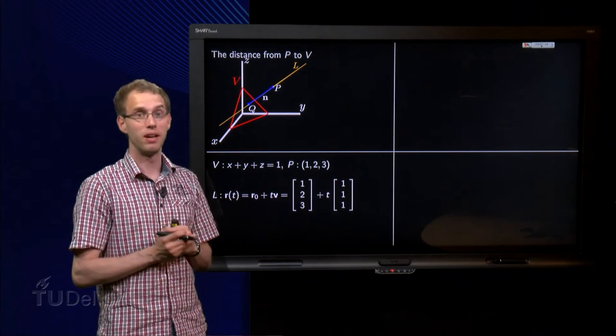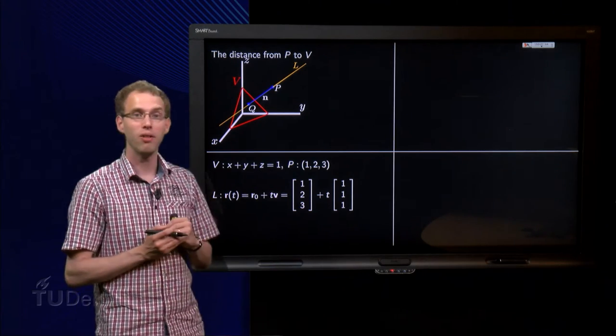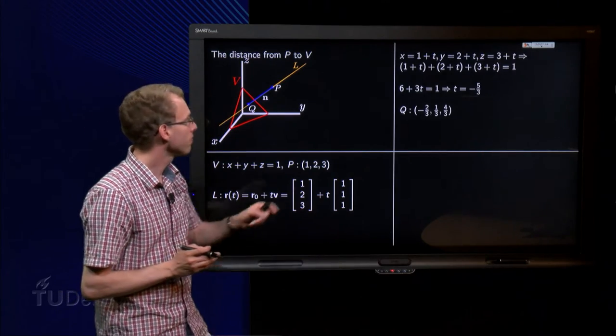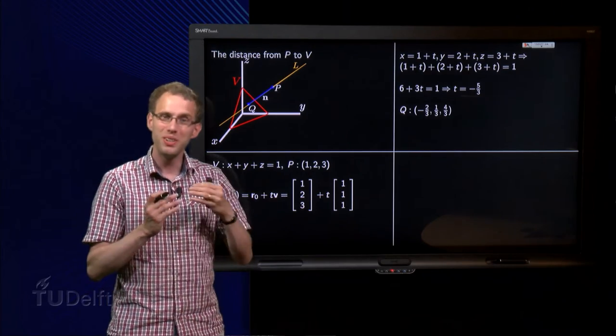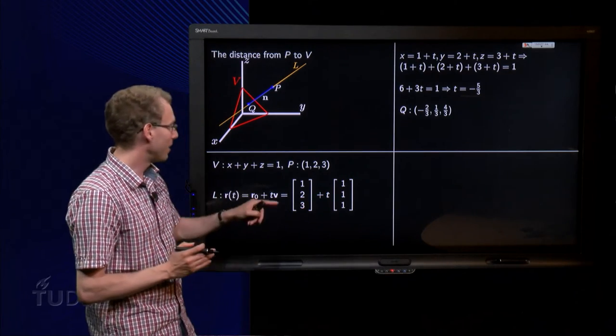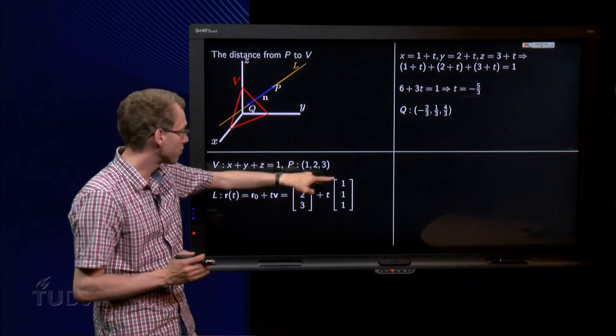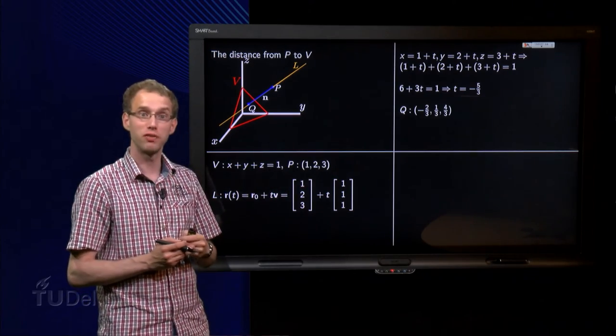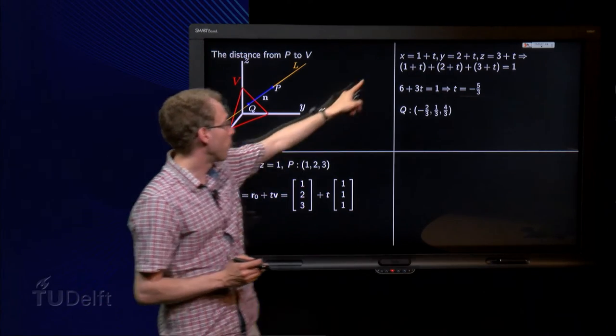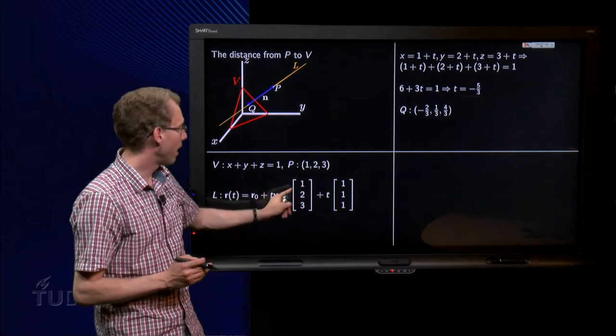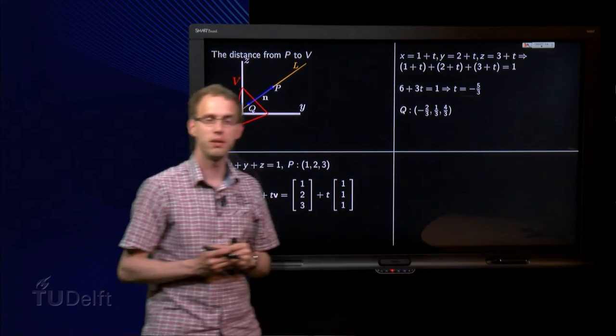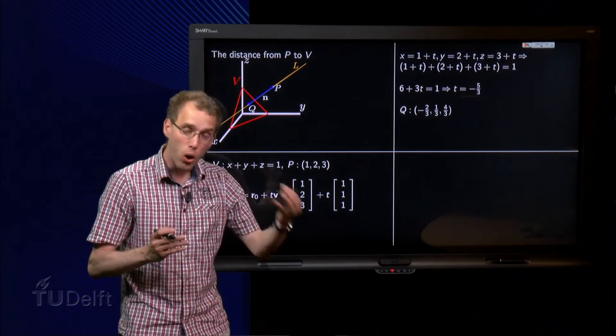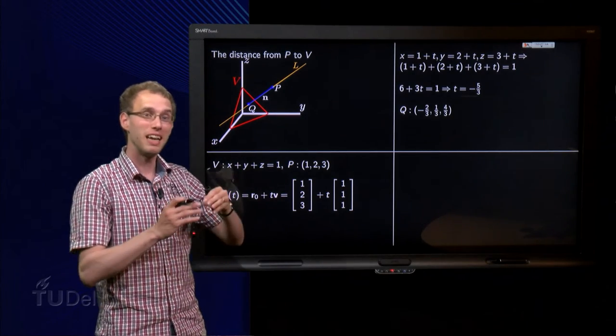Second problem, now we have our line L, how can we find Q? Well, for the point Q we know that it is on the line, so it has to satisfy X, Y and Z have to satisfy the parametric equation of the line. So X equals 1 plus T, Y equals 2 plus T, and Z equals 3 plus T.